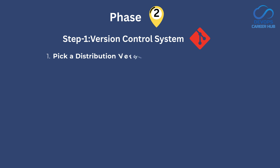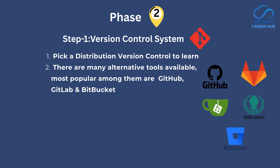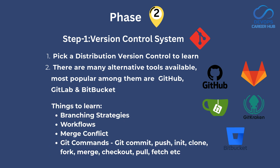In phase 2, you can start with learning version control. Pick a distributed version control system like GitHub or GitLab. One thing to note here is there are many alternative tools in DevOps at each phase, but throughout this video I will recommend tools that are widely used and have more scope from a job-getting perspective. Either pick GitHub or GitLab and start learning branching strategies and workflows. Try to understand what a merge conflict is and how to resolve it. Practice and remember the important Git commands like git add, git commit, git clone, etc.